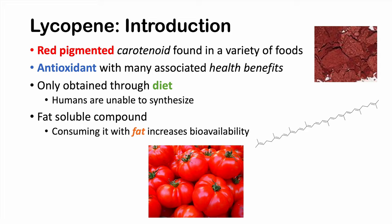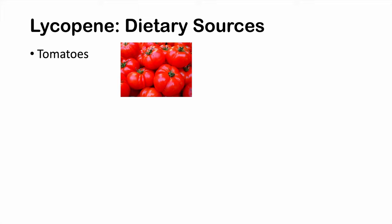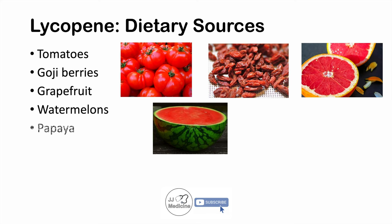What are some of the dietary sources of lycopene? Tomatoes are an important source, and processing tomatoes can improve lycopene absorption. Processed tomato products are great sources of lycopene, including tomato paste, pasta sauce, or even ketchup. We can also get lycopene from goji berries, grapefruit, watermelons, papaya, guava, apricots, and pumpkins along with carrots.